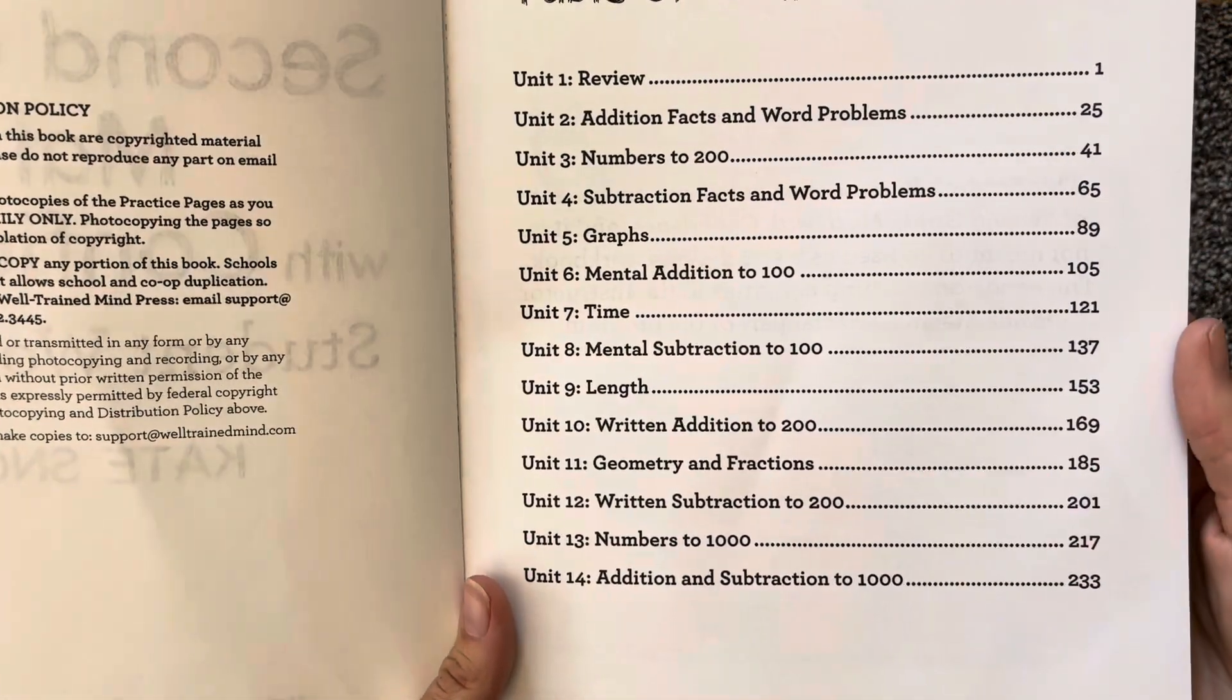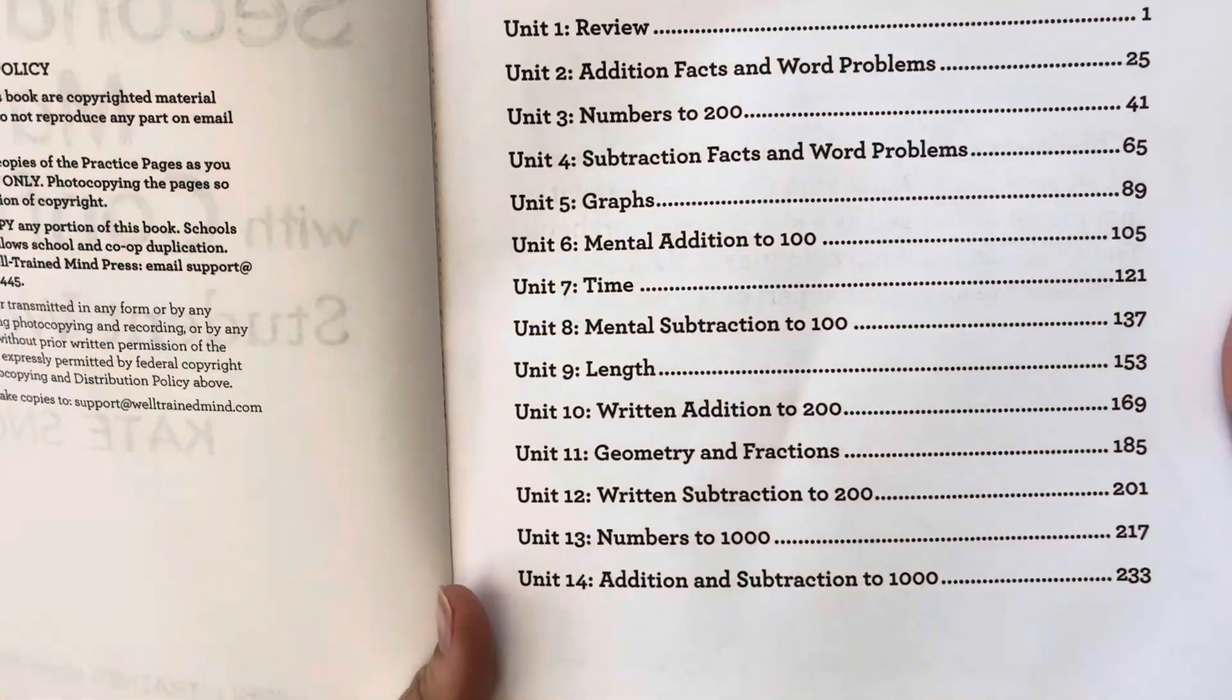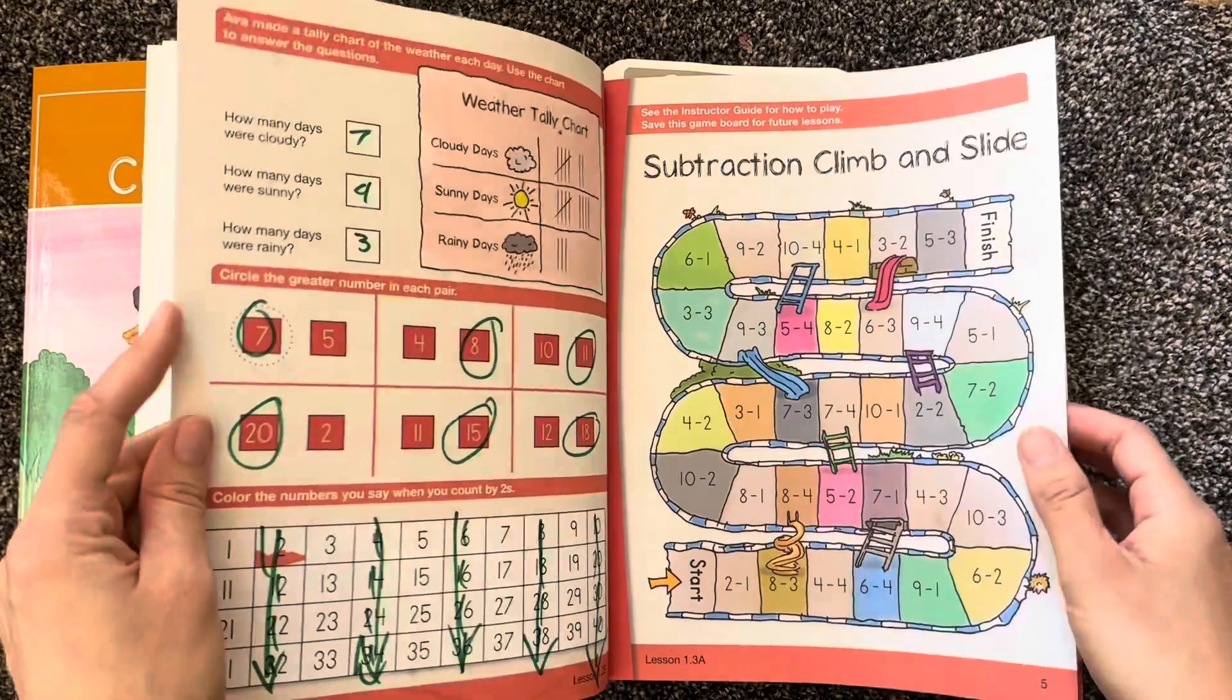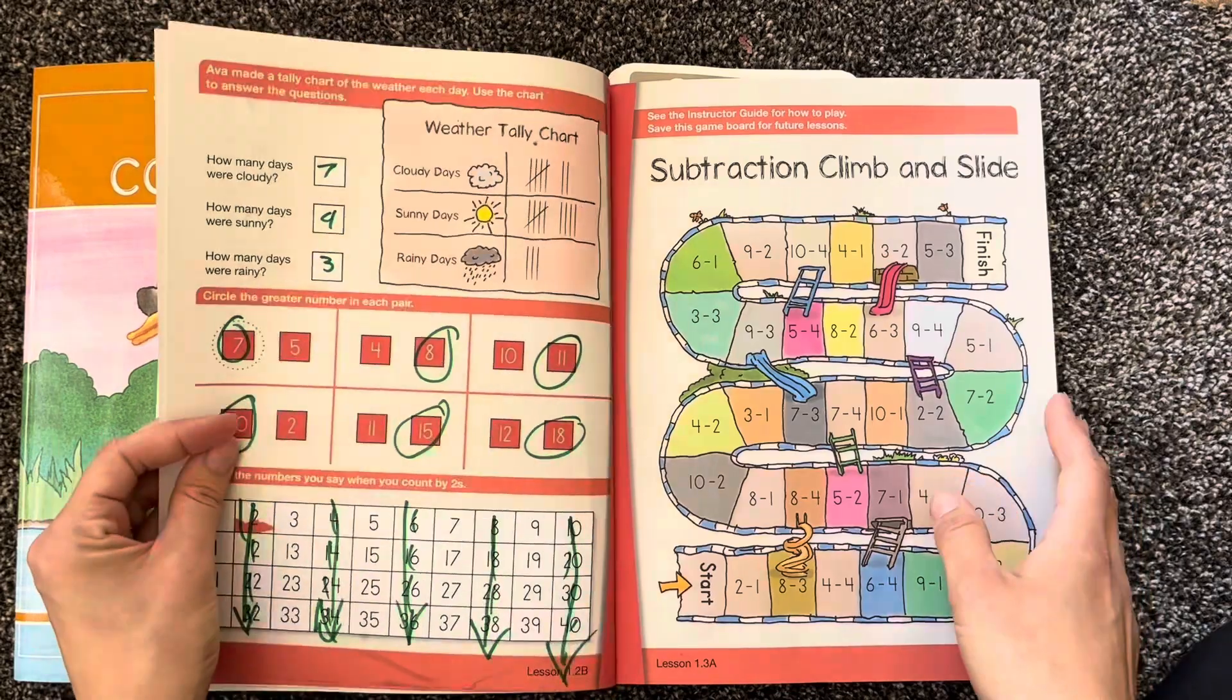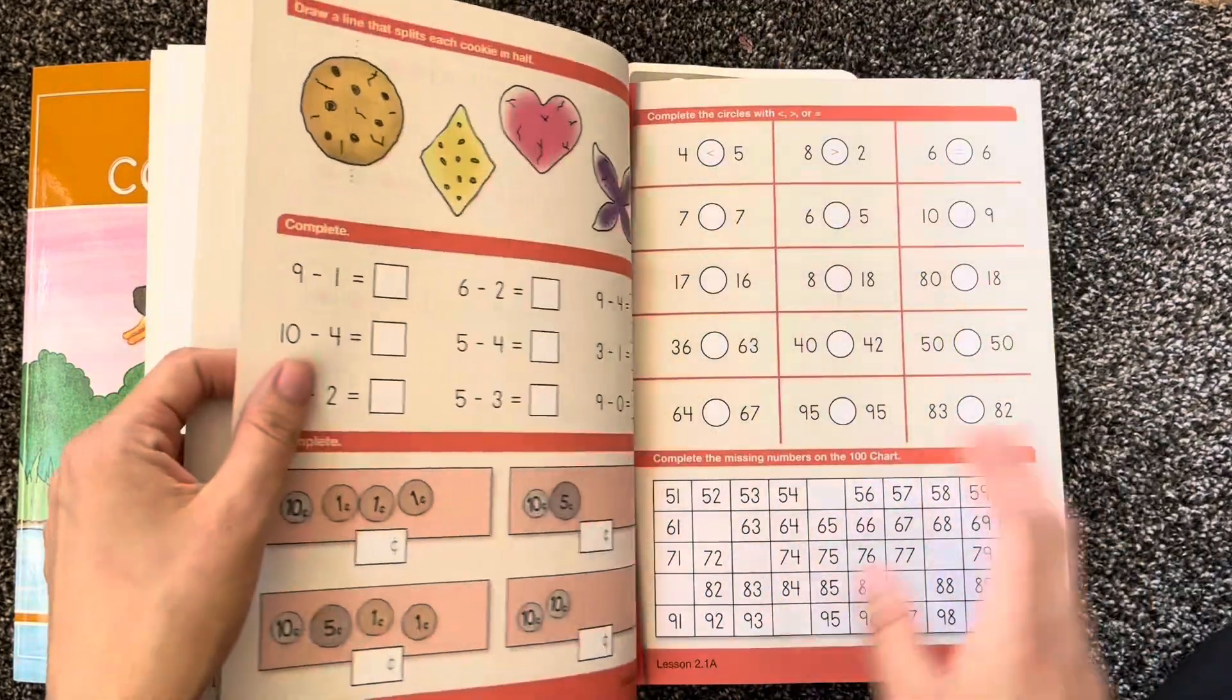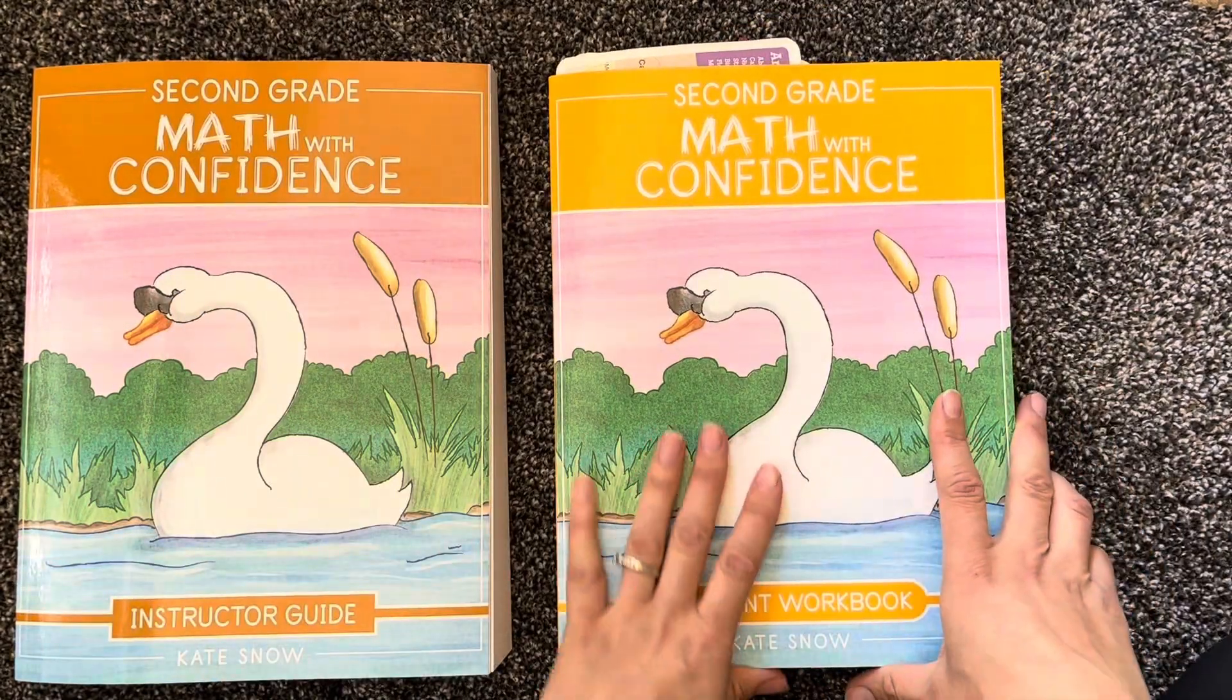Subtraction facts, graphs, mental addition to 100, time, mental subtraction to 100, length. Then within each unit, it's divided into weeks. My plan after I do this video is to rip out a week at a time and put it into their homeschool binder so they know they have to finish this this week. I'll put a link in the description for you with how we do our binders.